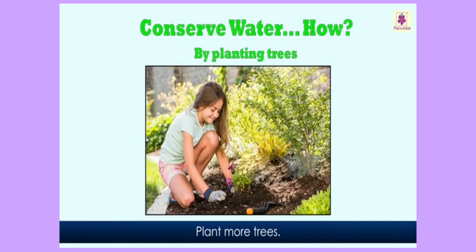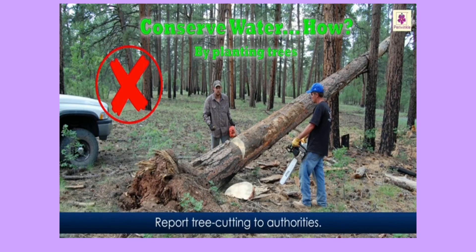We can also conserve water by planting more trees. If we plant more and more trees, we can get heavy rain. Rain is the main source of water — if we get rain, all water bodies like lakes, rivers, ponds and seas are filled with water. We should also report tree cutting to authorities.